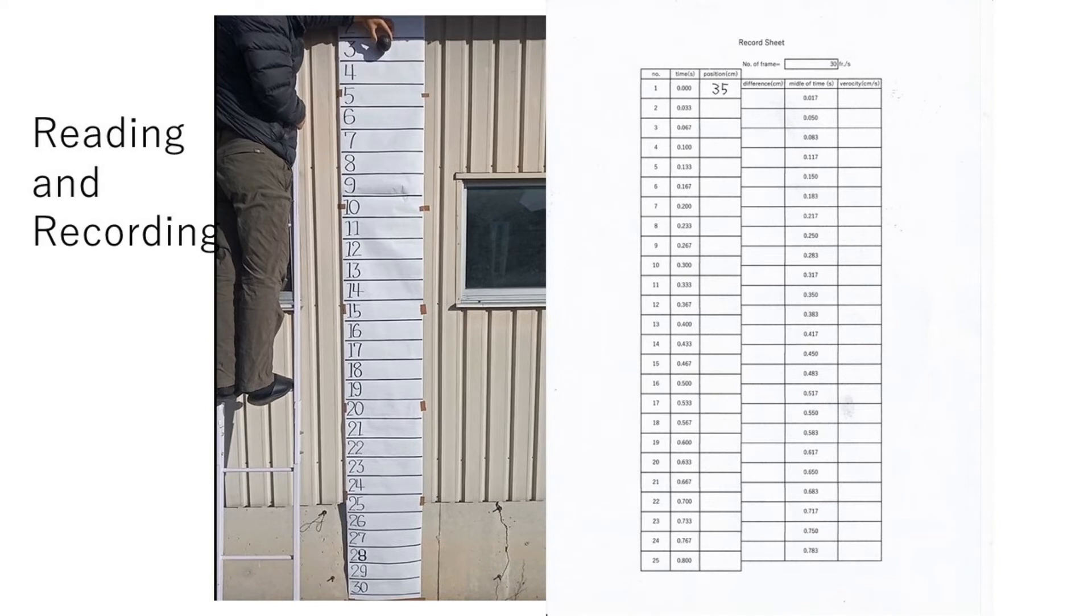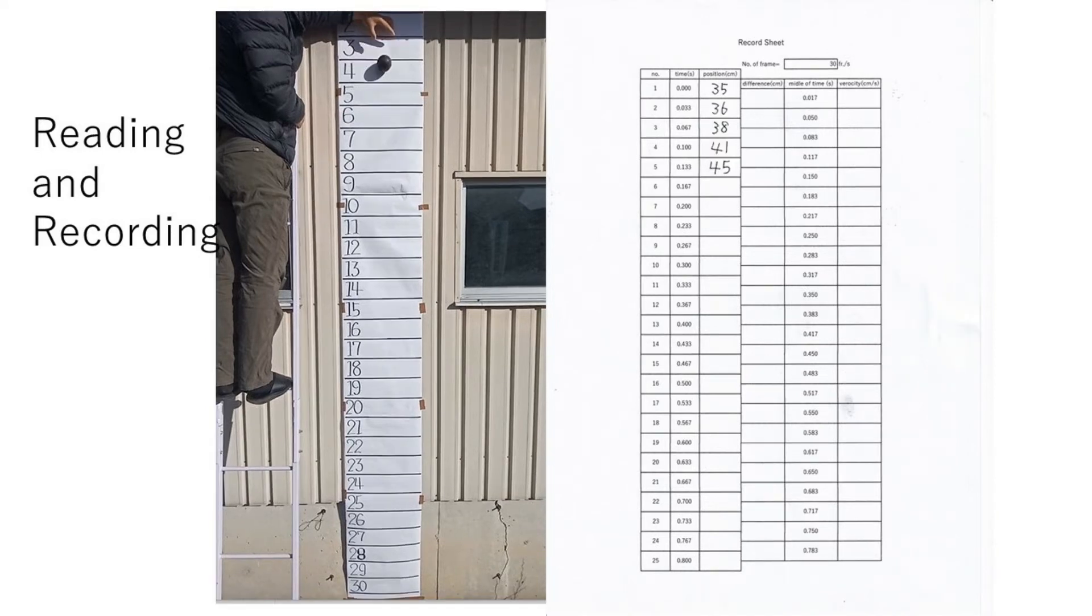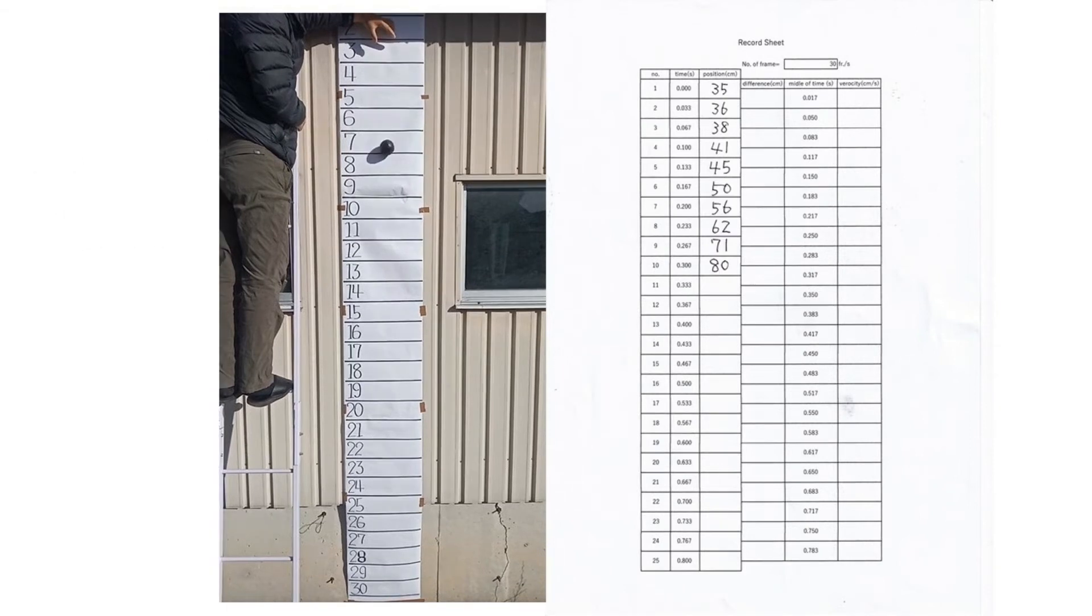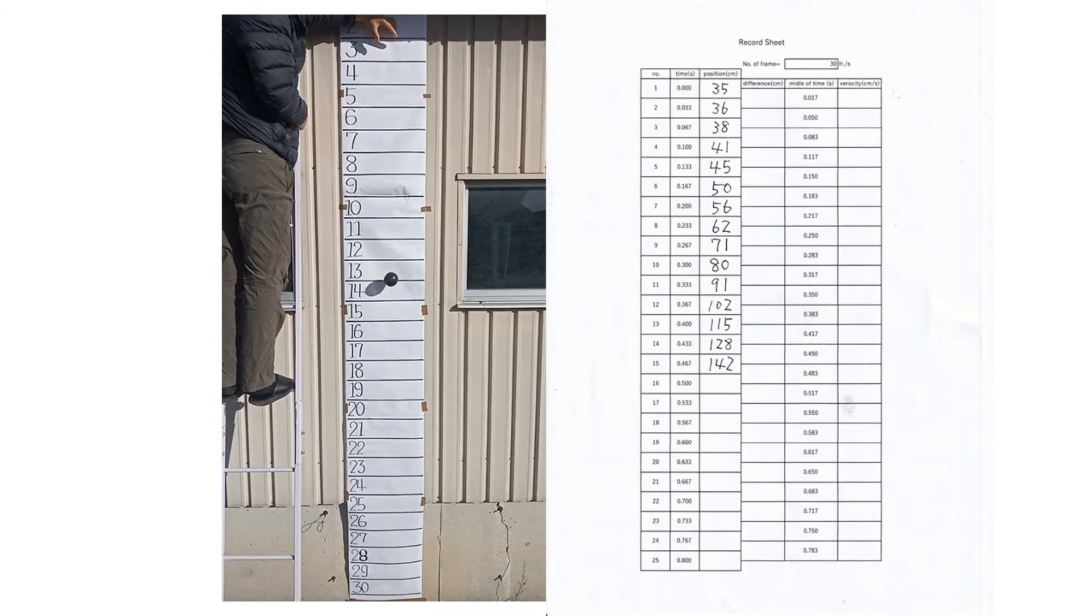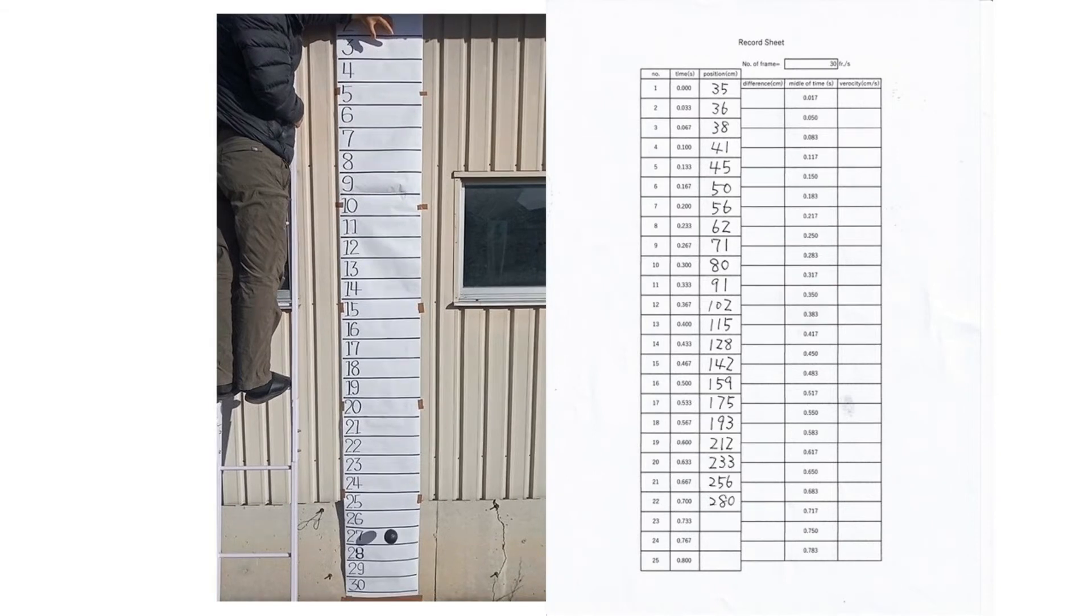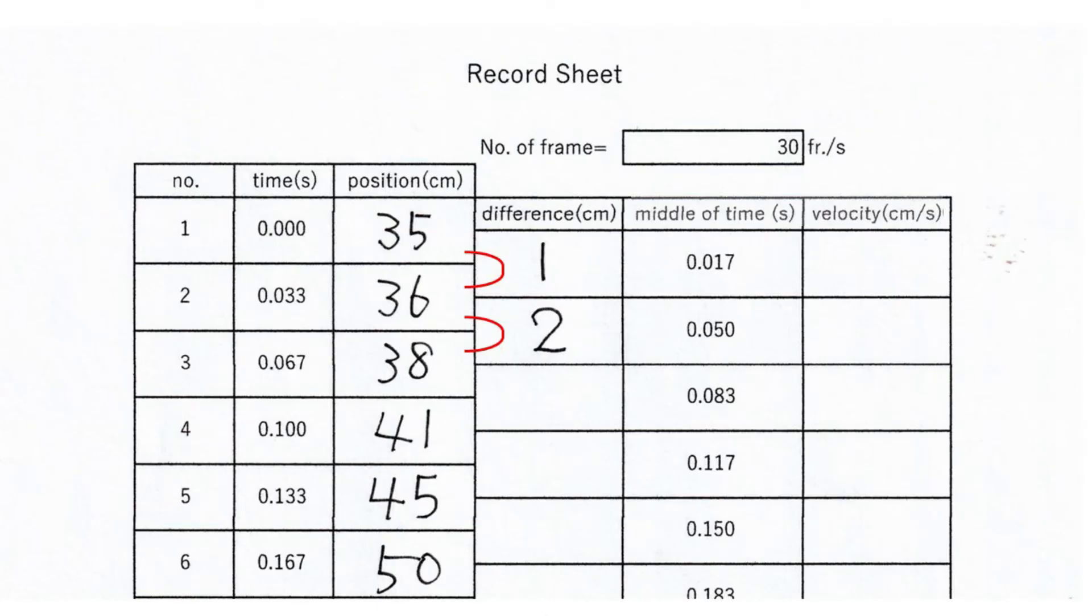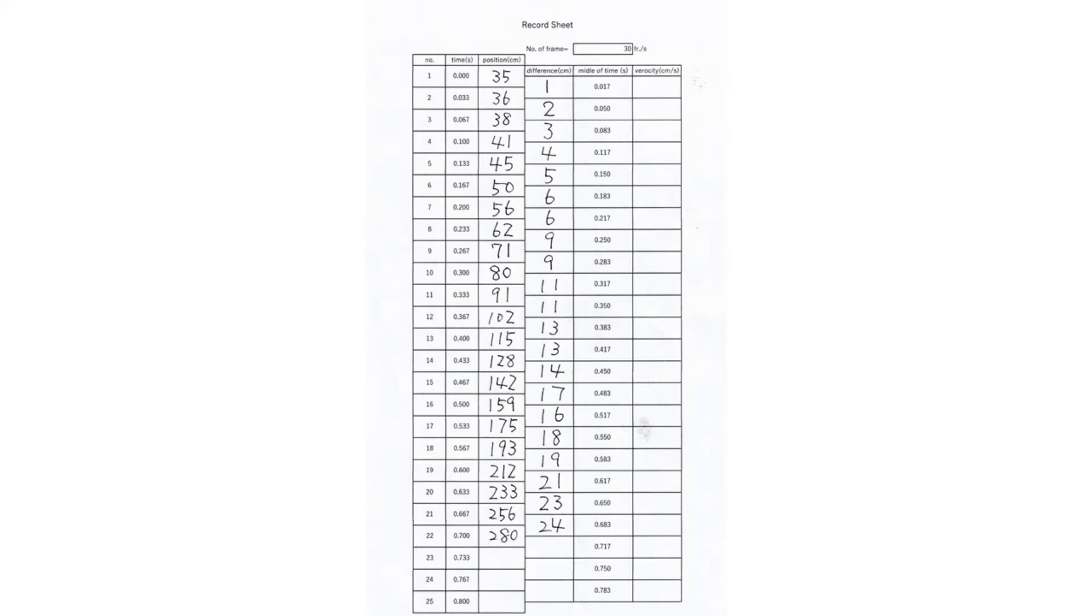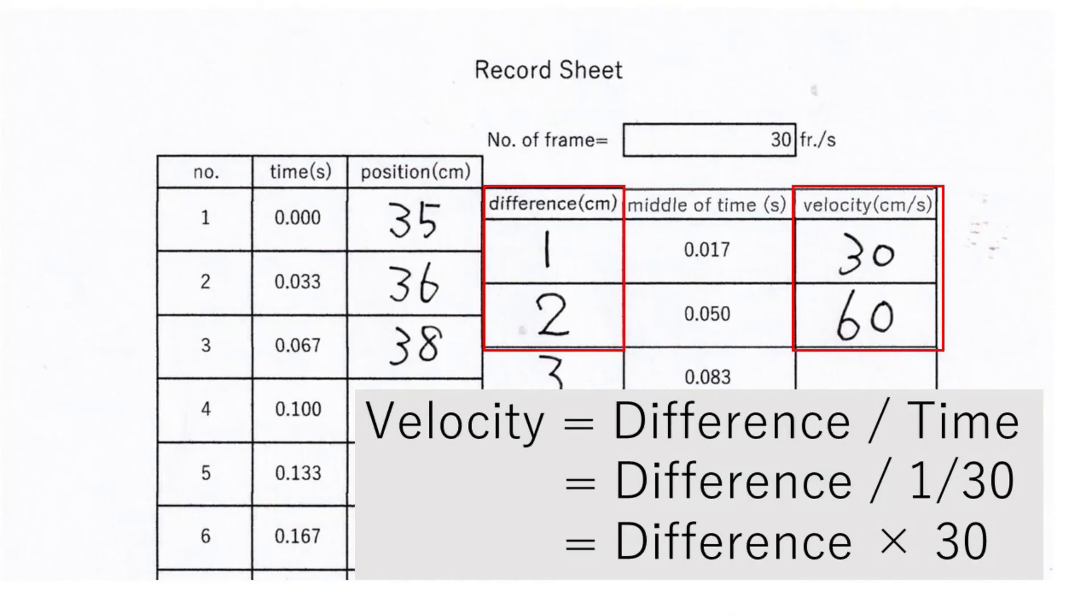Let's read and record the ball position from each frame of the video. Calculate the difference of the position of each frame. The periodical velocity of each frame is calculated from the difference.